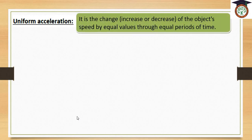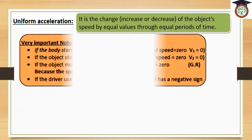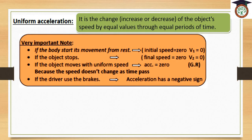Uniform acceleration is a change of the object's speed by an equal value through equal periods of time. This change may be an increase or a decrease in the object's speed.